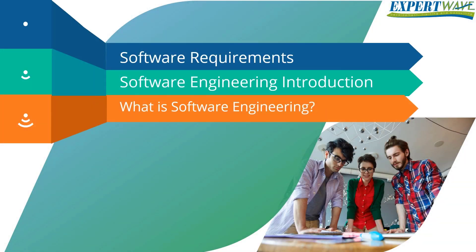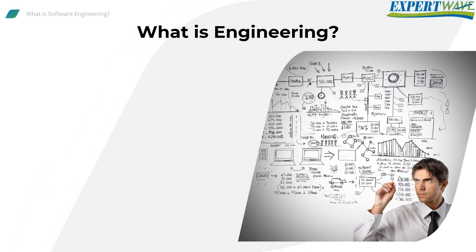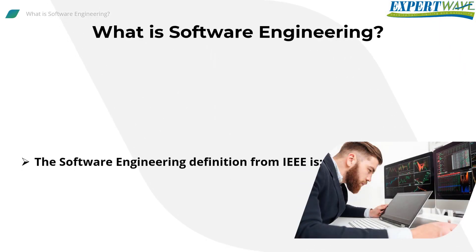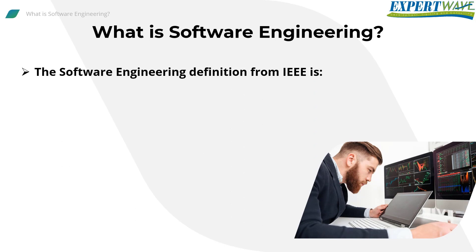What is software engineering? Hello everyone and welcome to our software engineering series. The definition of engineering is the use of scientific principles to design and build machines, structures, and other items to achieve a goal. Therefore, software engineering uses scientific principles to design and build software to achieve a goal.